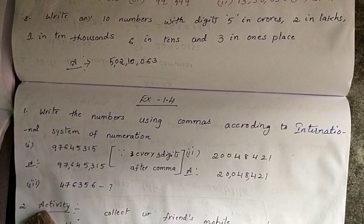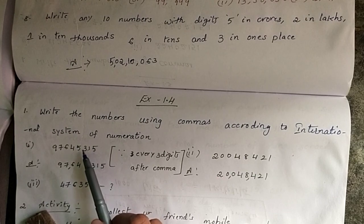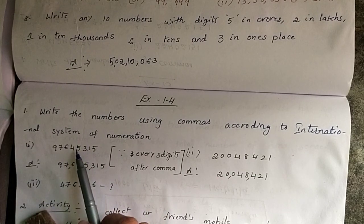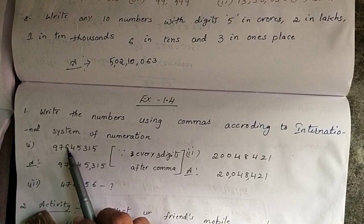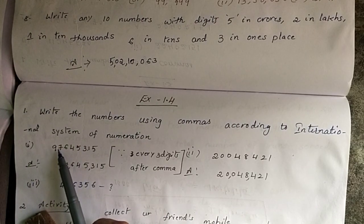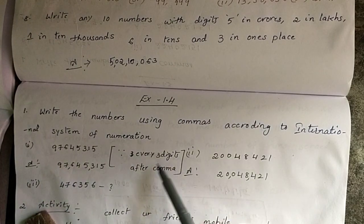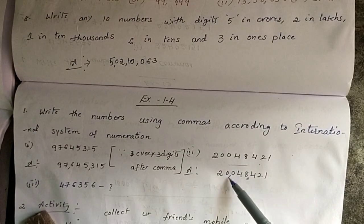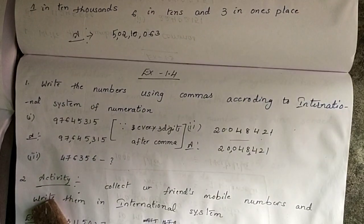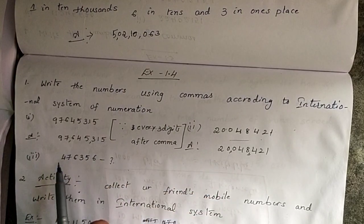See here: ones, tens, hundreds — then comma. Then 1,000; 10,000; 100,000 — then comma. Then millions and ten millions. So every 3 digits, place a comma. Count 1, 2, 3 — comma; 1, 2, 3 — comma; 1, 2 — and write accordingly.